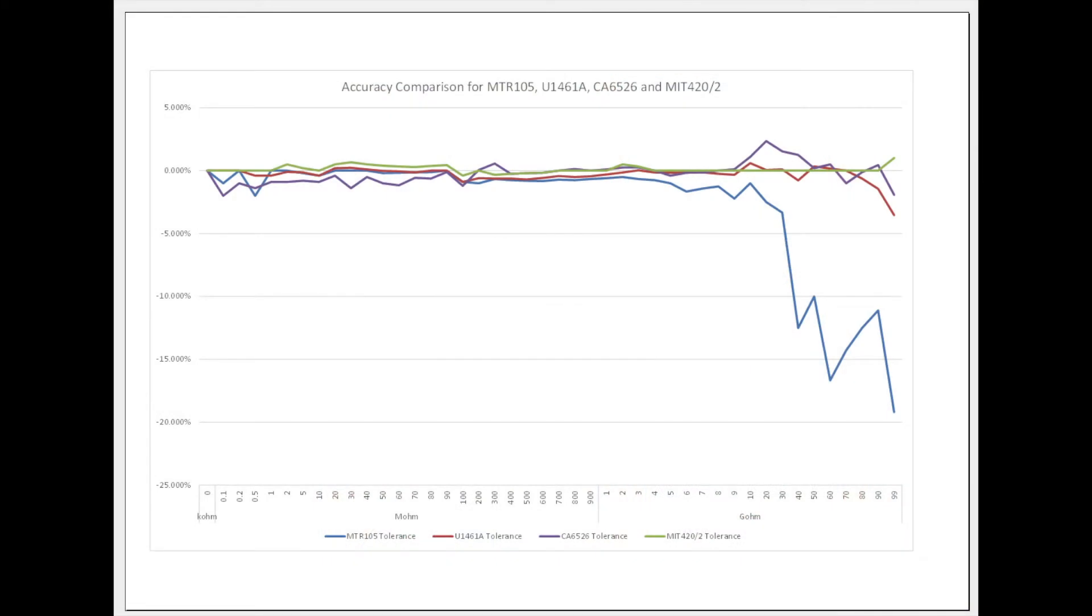So the other plot I have here is for a comparison to other instruments. This is actually the MTR105, the Keysight unit, a Chauvin Arnoux unit and the Mega MIT 420 that I have. You can see all these other units follow a fairly straight line graph across. You can see the 1461 drops away a little bit at the 99 gig ohm test but the MTR105, you know 20 gig ohms, you see it's starting to drop away from the rest of the instruments there. But interestingly the 420-2 does seem to be accurate, it's just this MTR105.